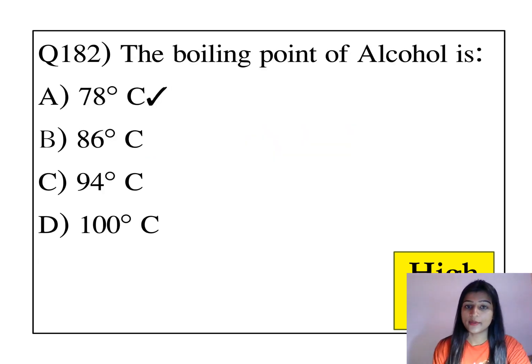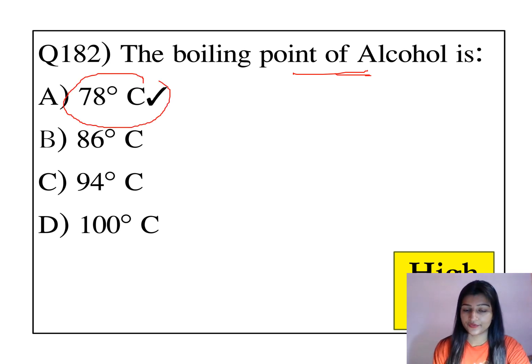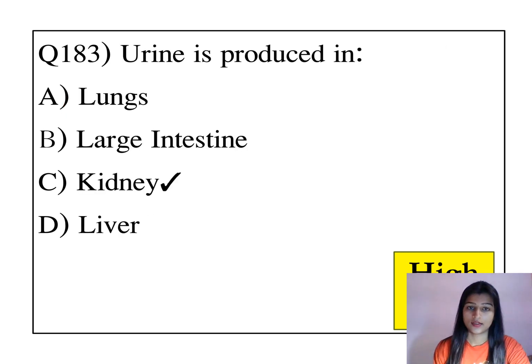The boiling point of alcohol is 78 degrees Celsius. Urine is produced in the kidney.